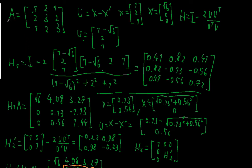I have the following matrix A: [1, 2, 1], [2, 3, 2], [1, 2, 3].